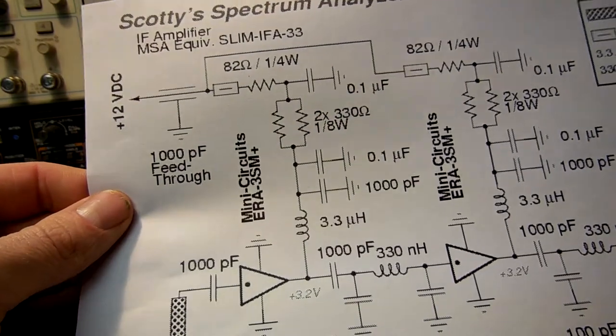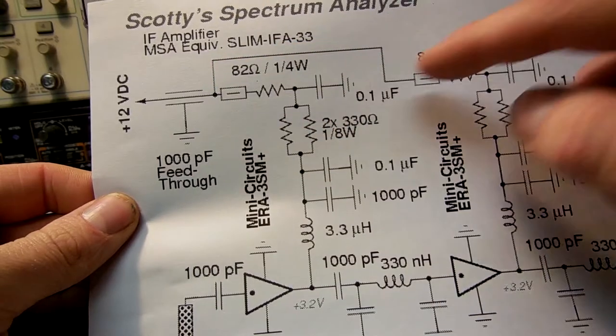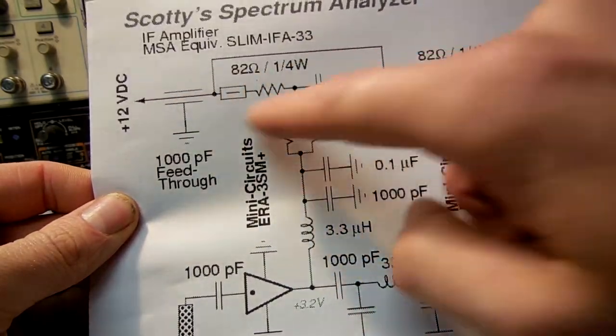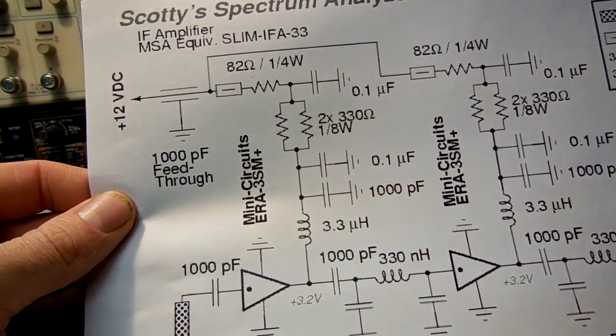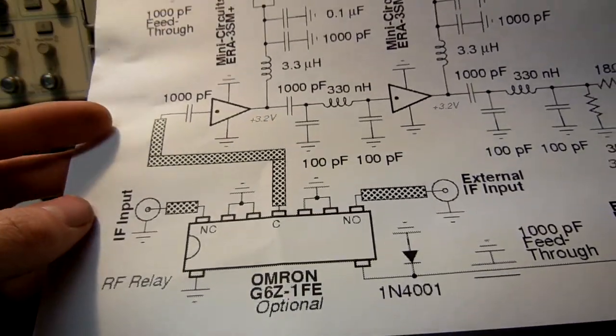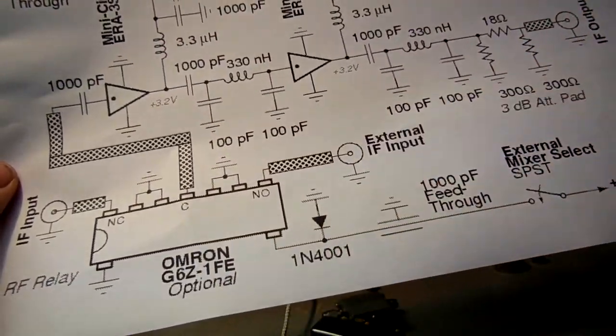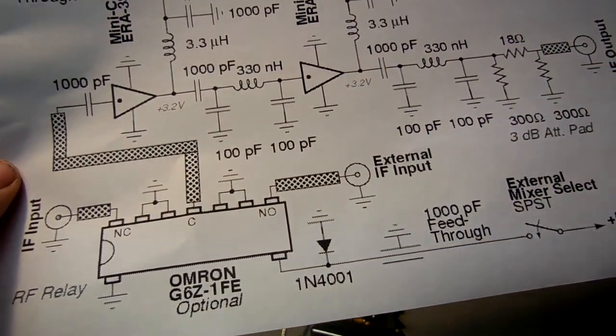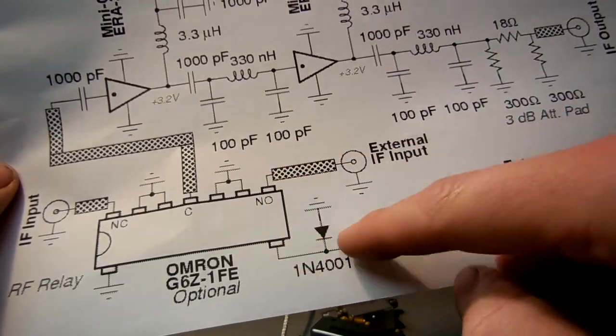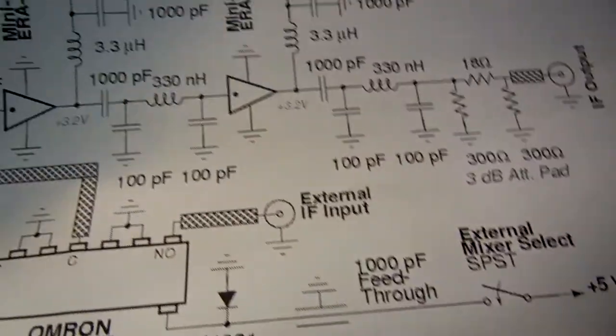And you also, I'd put just regular ferrite beads towards the input. Again, that just acts as a low-pass filter for any RF that happens to be on the line itself. This diode just prevents any kickback from the inductive kickback when the relay operates, so you don't want that going back into our 5 volt line.